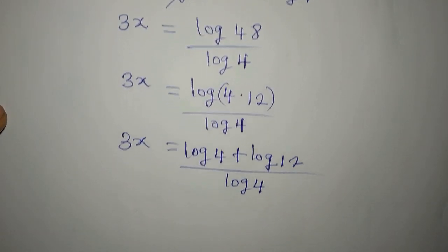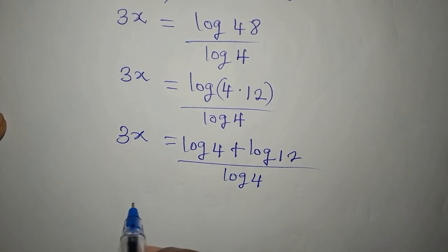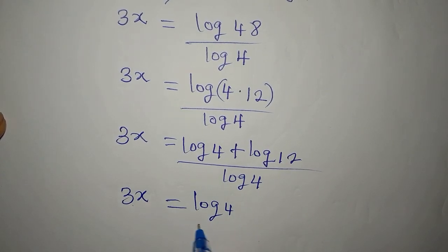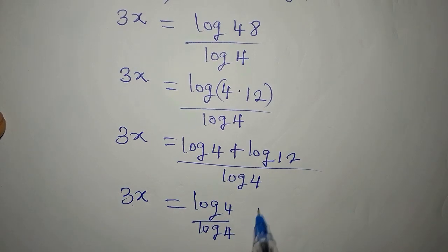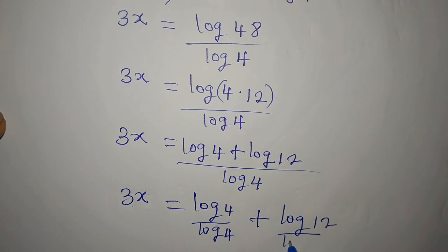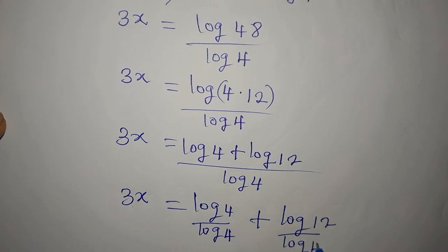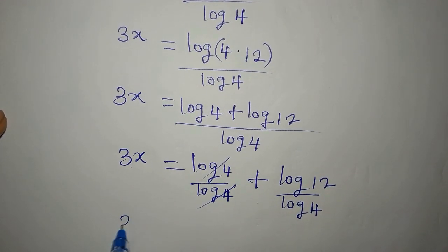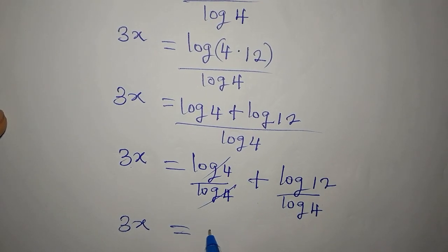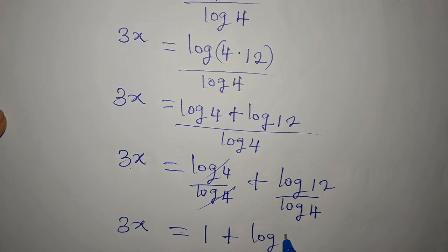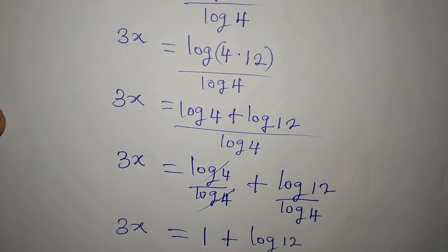This is the same as 3x being equal to log 4 over log 4 plus log 12 over log 4. Now log 4 over log 4 cancels to 1, so we have 3x equal to 1 plus log 12 over log 4.